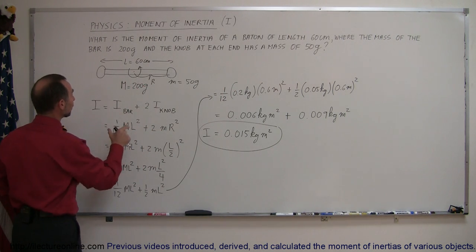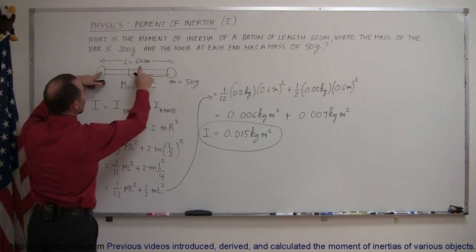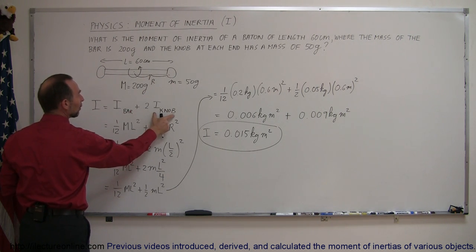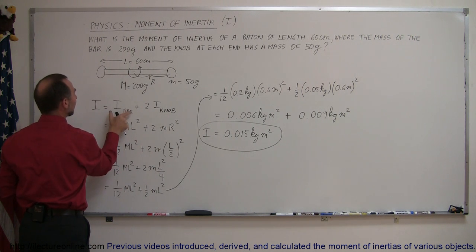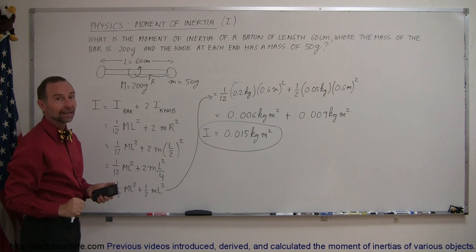Remember, what you do is you find the moment of inertia of each piece independently. Notice that these are symmetric, they're the same distance, same mass, so we can just simply double the moment of inertia of each of the ends. And then we take the moment of inertia of the bar, simply add it together algebraically and there's the sum. And that's how you find the moment of inertia of any object.